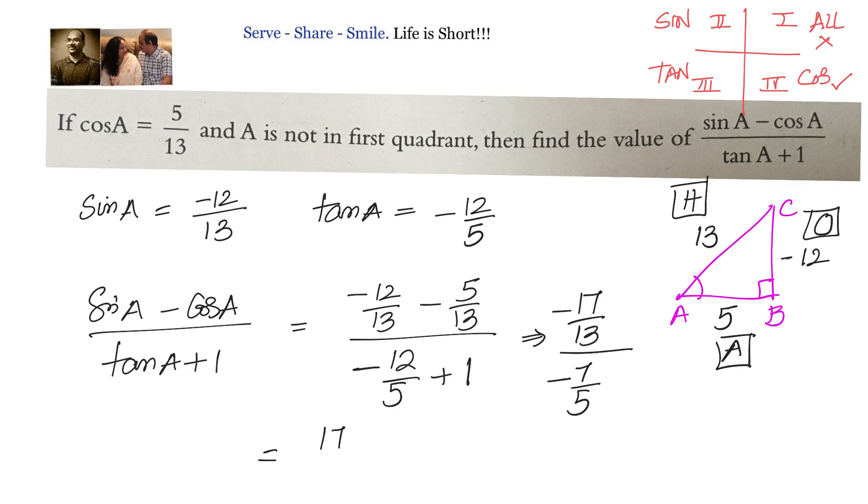This will be equal to minus minus minus will cancel 17 by 13 into 5 by 7 which cannot be simplified, so it is 85 divided by 91.